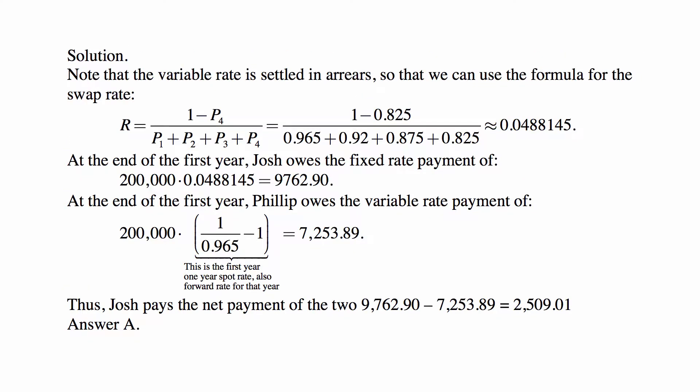Here we use this formula. We note that the variable rate is settled in arrears, and that means we can use the formula for the swap rate — the fixed rate of the swap. It's determined as (1 minus P4) divided by (P1 plus P2 plus P3 plus P4), where those P's are the prices of zero-coupon bonds maturing at those times with a value of 1. The times 1, 2, 3, 4 correspond to the times of the payments of this swap — they're not just arbitrarily year 1, year 2; they correspond to the times of the payments.